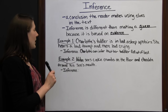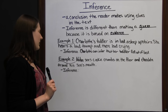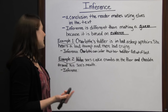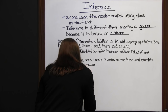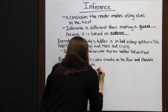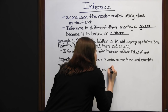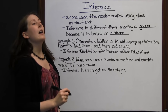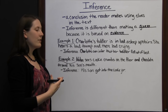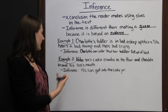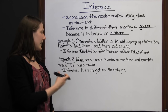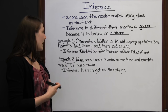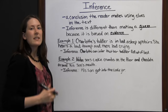Another example: Nolan sees cookie crumbs on the floor and chocolate around his son's mouth. Cookie crumbs on the floor and chocolate around his mouth tell you that Nolan's son got into the cookies. It may not be the cookie jar specifically, but you know that if there are cookie crumbs and chocolate around his mouth, the kid got into cookies somehow. You can infer he got into the cookie jar or a pack of cookies without the author explicitly telling you.